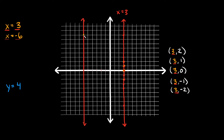If you plotted a bunch of random points all along this line, they would all be in the form of negative 6 comma something. The point is they would all start with negative 6. So that's why this line right here represents x is equal to negative 6.